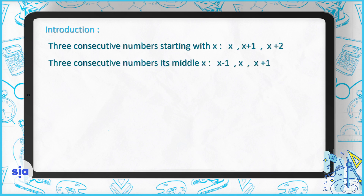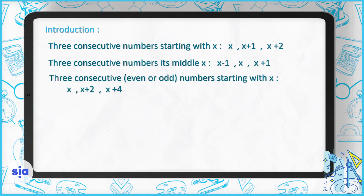With the same idea, what are the three consecutive numbers if the middle one is X? The number in the middle is X. To go next, we add one; to go back, we subtract one. So if the one in the middle is X, the next one is X plus one and the one before it is X minus one.